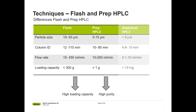The high loading capacity is the big advantage of flash — depending on the size of the cartridge, you can load up to 300 grams of sample. In prep HPLC, this is completely different: the loading is rather low, as is the flow rate and the column ID. Very importantly, the particle size is also rather small, and this is the reason for the high purities achievable with this method. The smaller the particle size, the higher the resolution and, with it, the purity of the target compound.